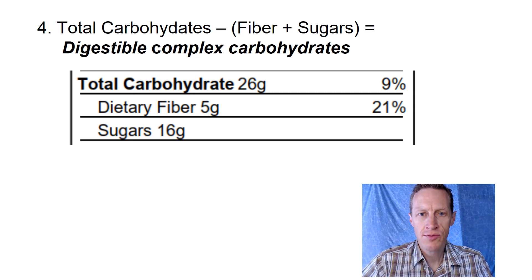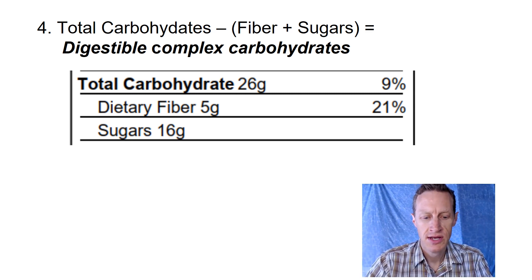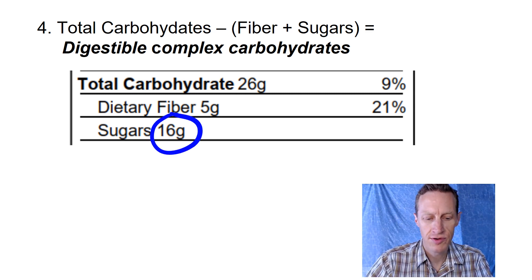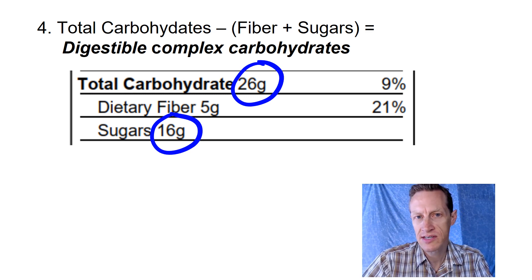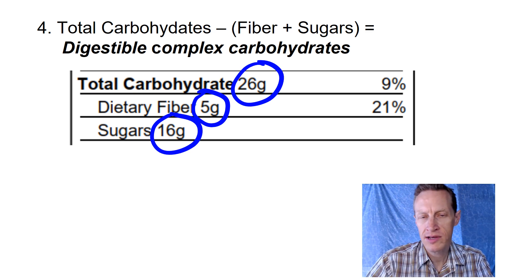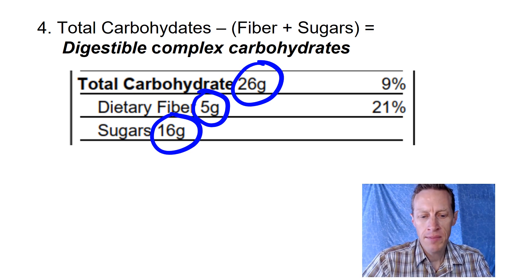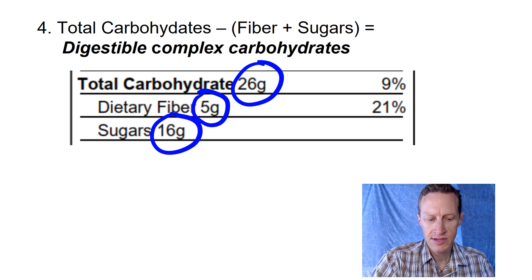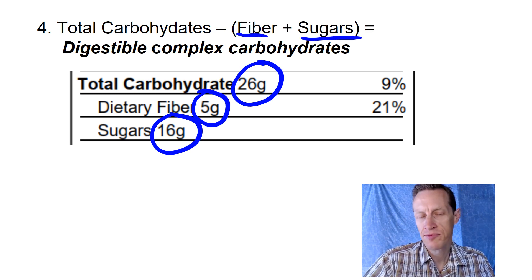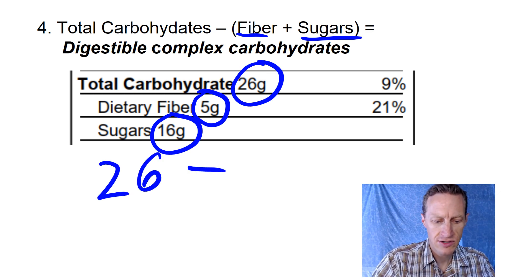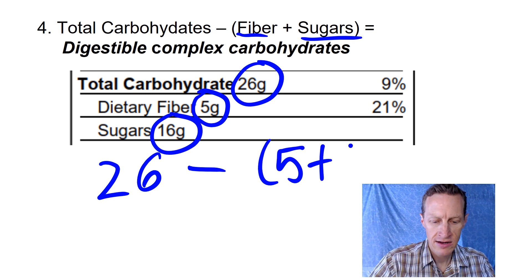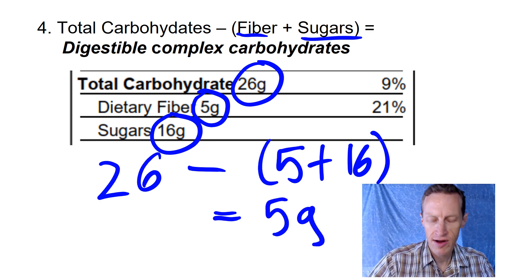Next, let's look at carbs. Sugars are the simple carbs, and you can see that the sugars listed for our kiwi fruit is 16 grams. So out of 26 total grams of carbs, 16 are sugar. Fiber is a complex carb, but remember we cannot digest fiber. A useful number to calculate is how many carbs are digestible complex carbs like starch. We take the total carbs and subtract both fiber and sugars. In our kiwi, we subtract fiber and sugars — that's 21 — from 26, leaving 5 grams of starch.